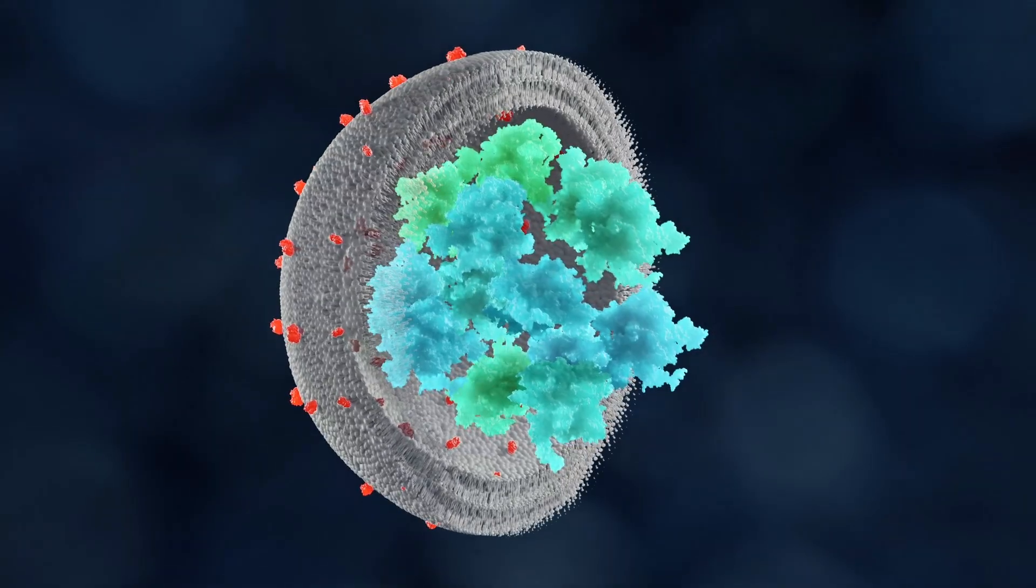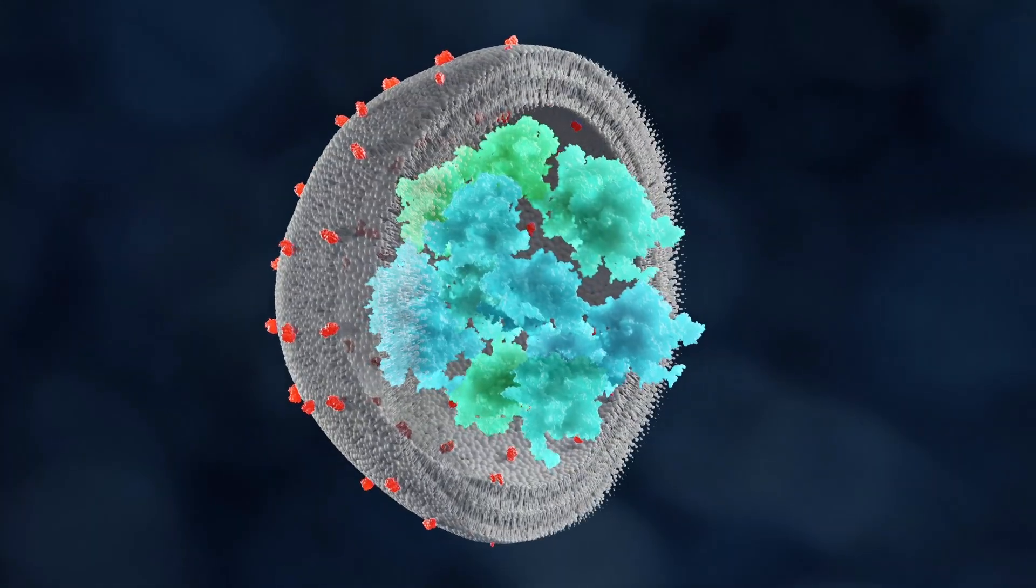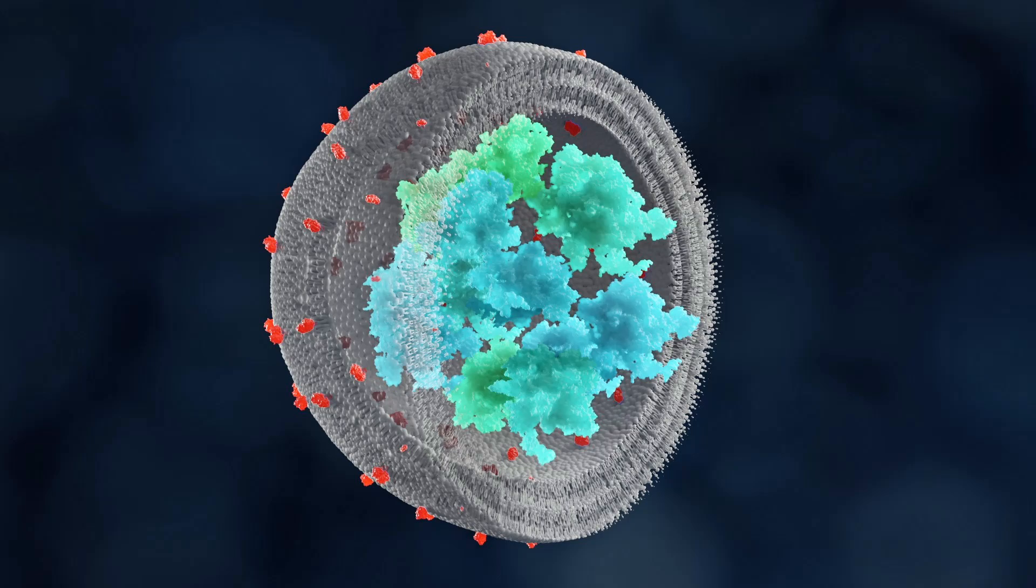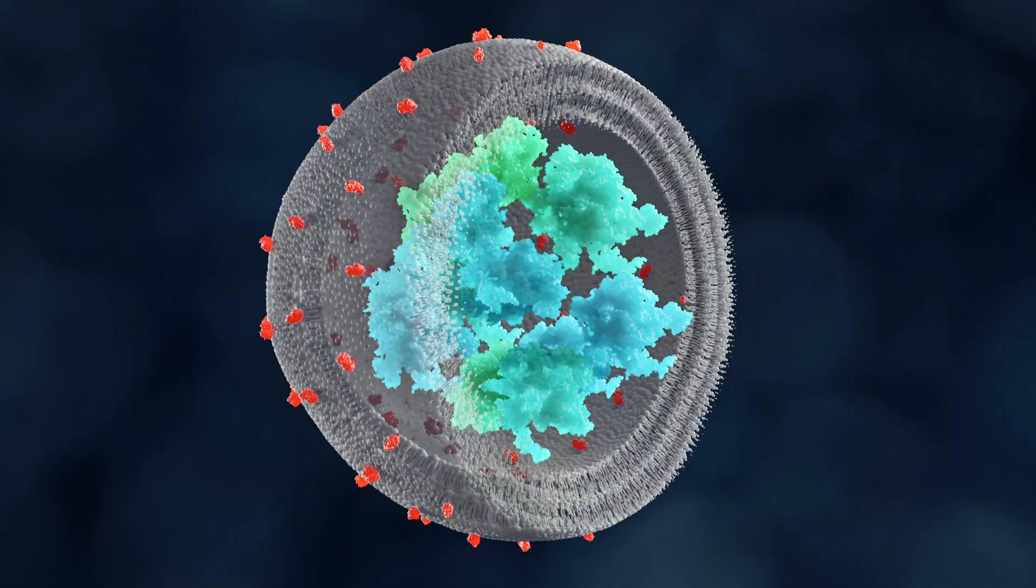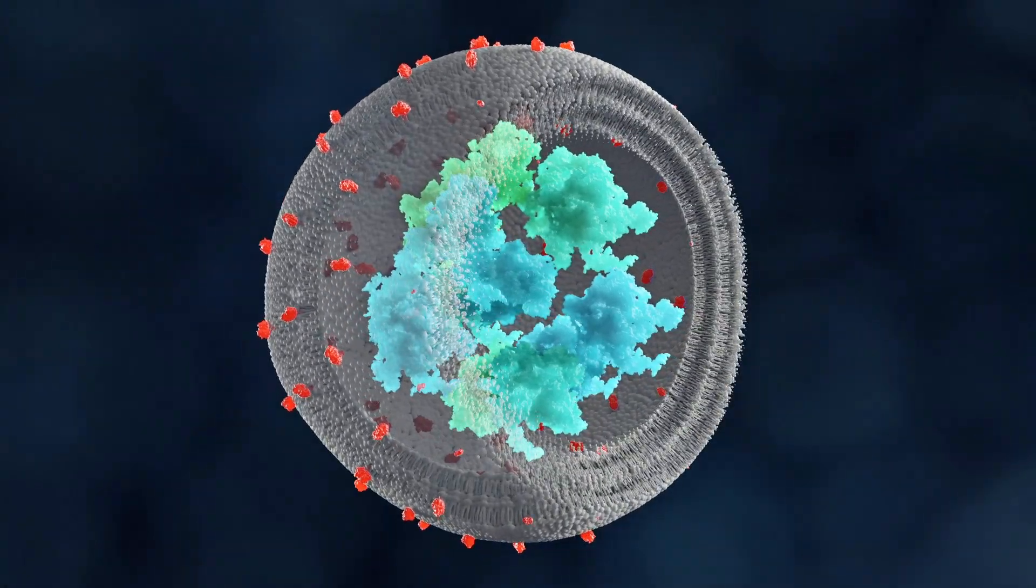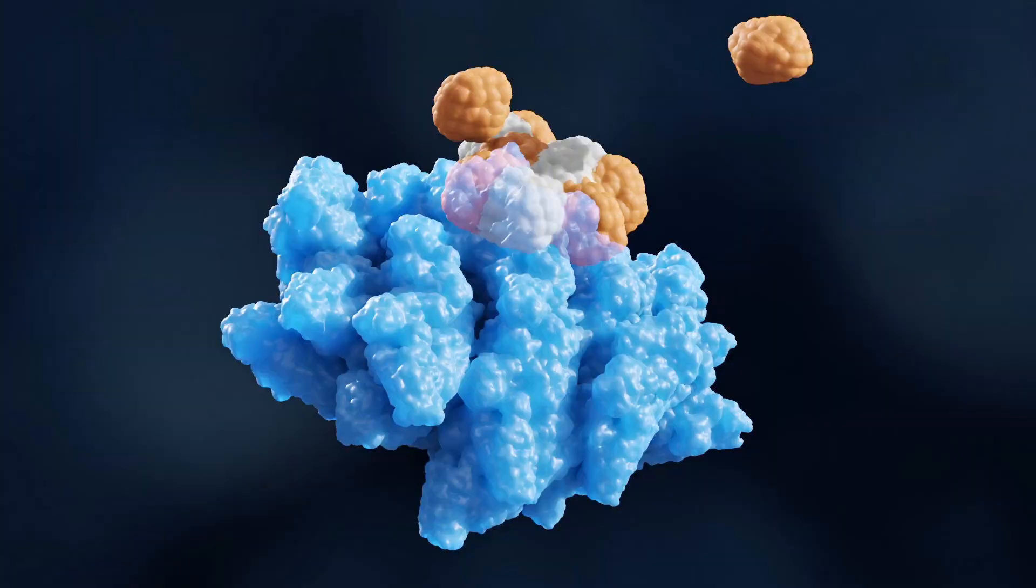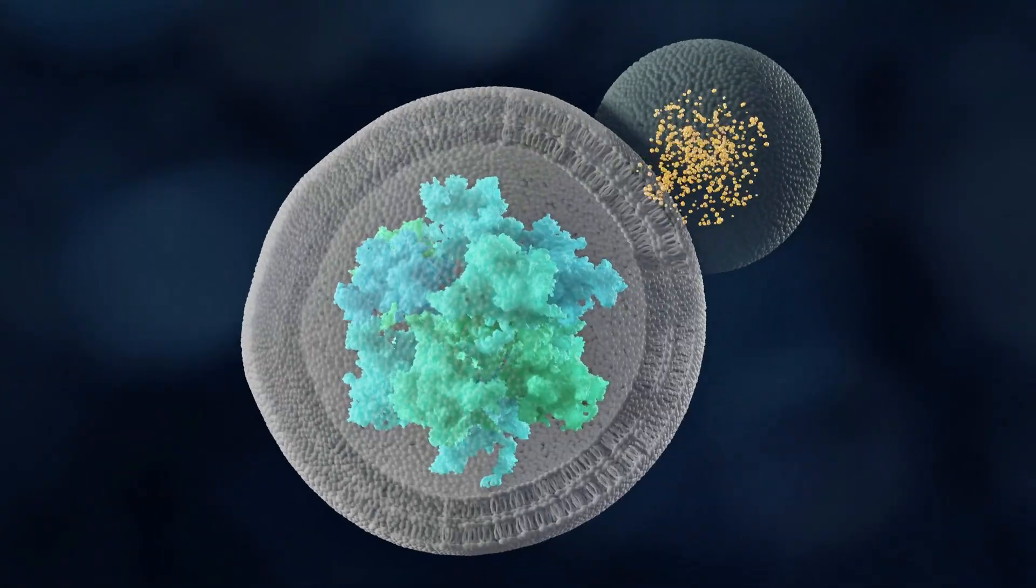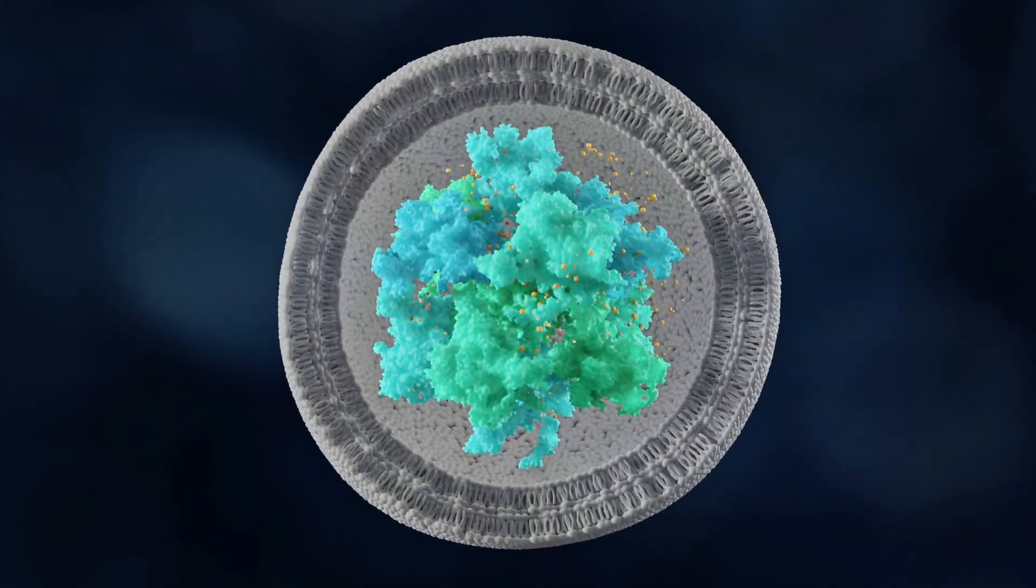Autophagosome biogenesis and consumption can be divided into five discrete and consecutive steps, each one involving specific sets of core ATG proteins but also other factors: initiation, expansion, maturation, tethering and fusion, and breakdown and recycling.